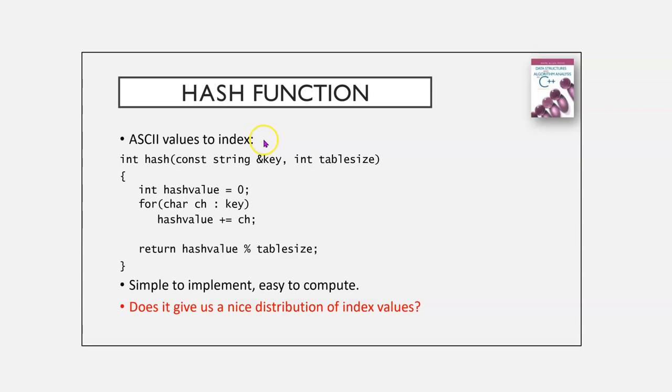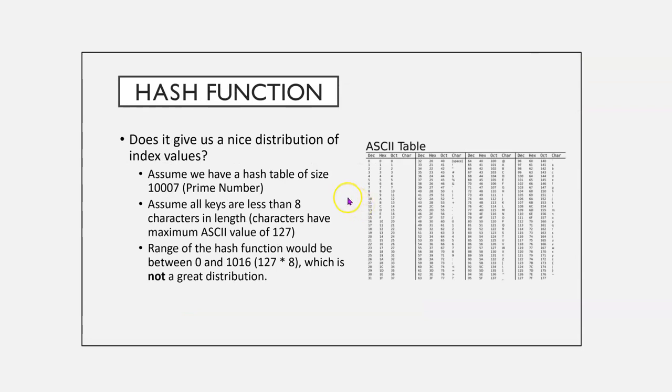We could use ASCII values to an index. So, our hash function would take a string and our table size, and we'd set it to 0, and we'd add all the characters, and then mod it by the hash table size. That is simple to implement and easy to compute, but does it give us a distribution? Not that great of one. It will tend to cause clumping.